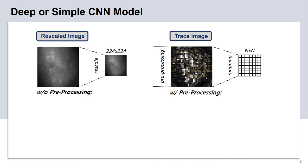As discussed before, we have two ways to decode the calcium image. First, we can decode from the raw calcium image directly, bypassing all of the preprocessing steps. Second, we can first apply calcium image preprocessing and trace extraction based on either the cell contours or the tile contours. Then we create an image using the extracted trace values, and then perform the decoding from the trace image.